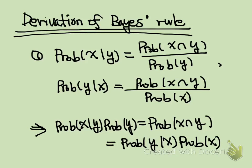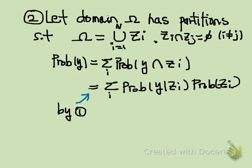For the derivation of Bayes' rule, we are going to use two facts. First, the definition of conditional probability. Second, when the event domain has n numbers of partitions, what's the probability of Y?